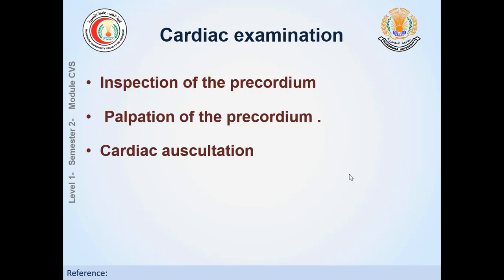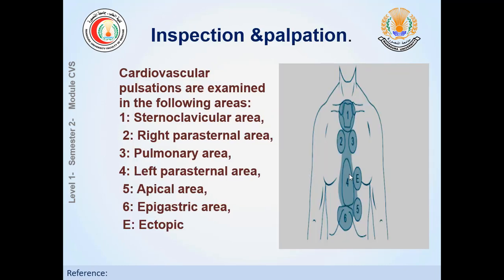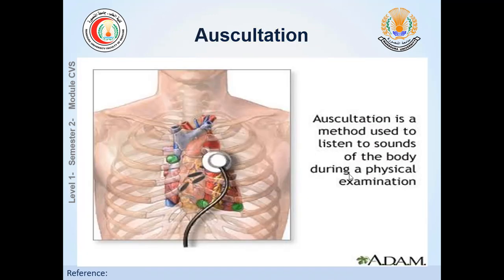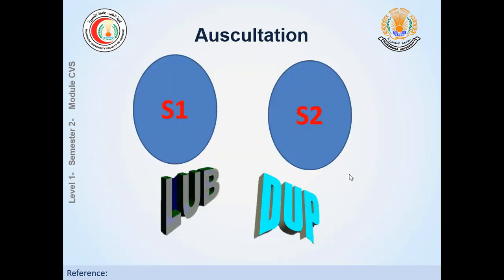For local cardiac examination, you first inspect the precordium — the part of the chest wall covering the heart — looking for abnormalities such as surgical scars indicating previous cardiac surgery, visible blood vessels, abnormal shape of the chest wall, or skin changes. Then you palpate to feel for any pulsations. You also identify the different areas of the precordium to listen for cardiac pulsation using your stethoscope.